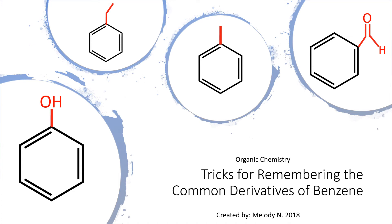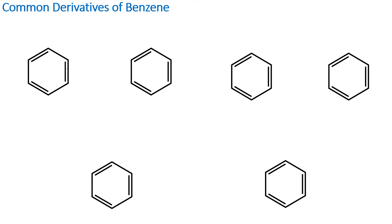Hi, my name is Melody and today we're going to learn the tricks for remembering the common derivatives of benzene for organic chemistry. Let's take a look at six common derivatives of benzene. Right here is a benzene ring — this is essentially an aromatic compound called benzene, and it's represented by a hexagon, which is basically a six-carbon ring.